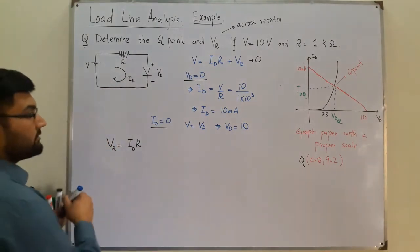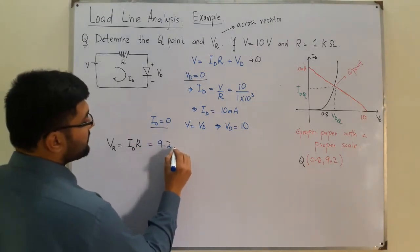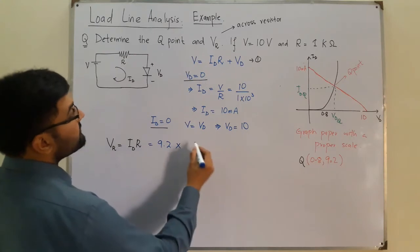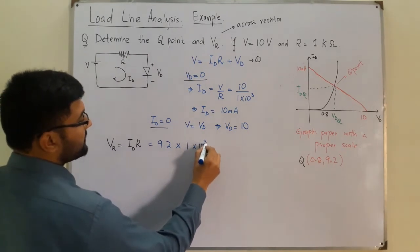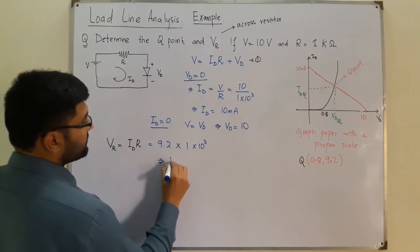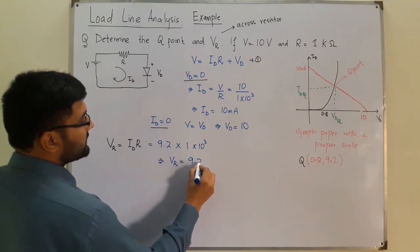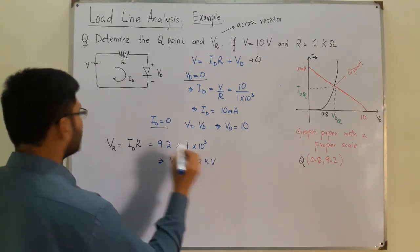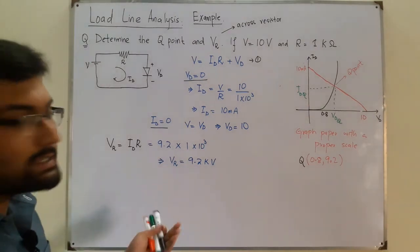I put the values over here. We have 9.2 multiplied by the value of the resistance which is 1 kilo ohm, 1 into 10 to the power 3. This would imply the voltage drop across the resistor VR is 9.2 kilo volts, and this is wrong.